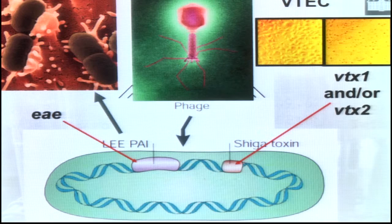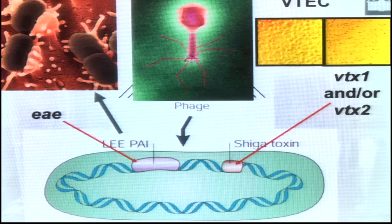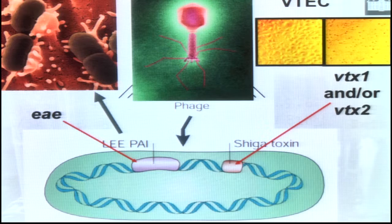There are two main features of STEC or VTEC. One is the EAE gene, encoded on a pathogenicity island referred to as LEE — the locus for enterocyte effacement — which allows the bacteria to destruct and adhere to the epithelial cells in the gut. The other feature is the capability of these bacteria to produce a very potent toxin called either VT1 or VT2, also referred to as STX1 or STX2. It is stipulated that just one molecule of this toxin is capable of killing a cell in the kidney.